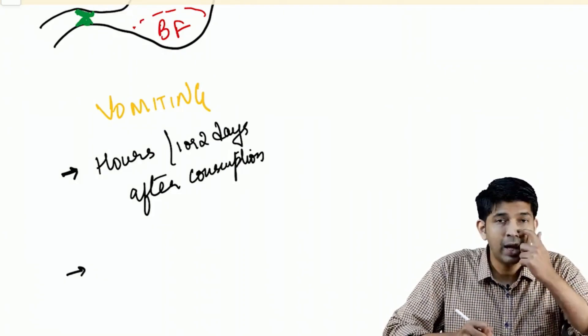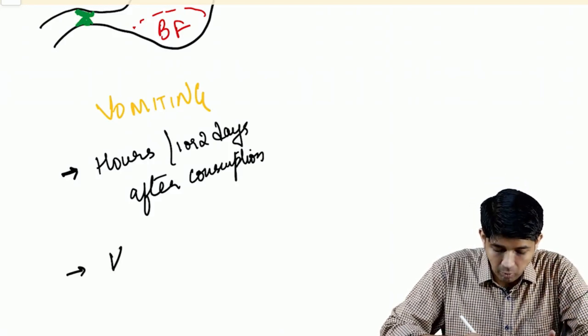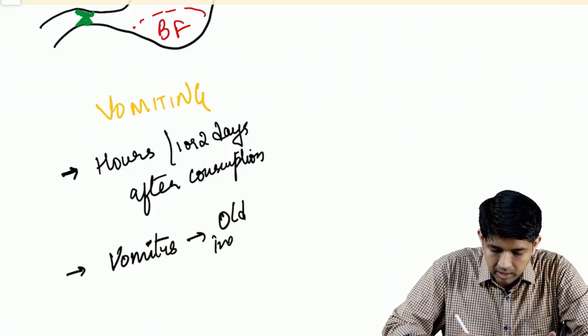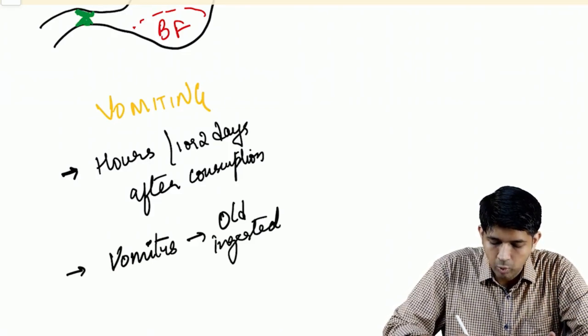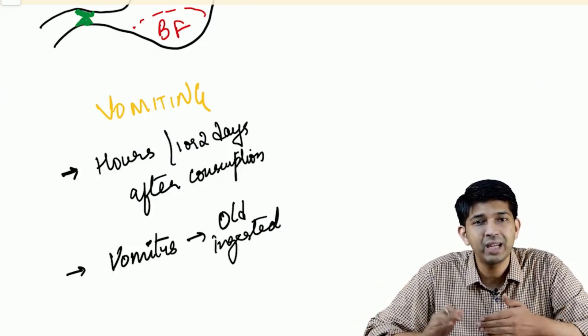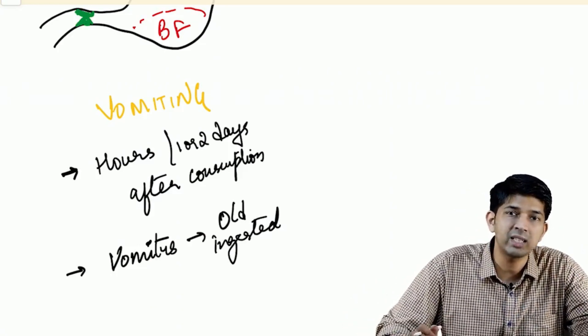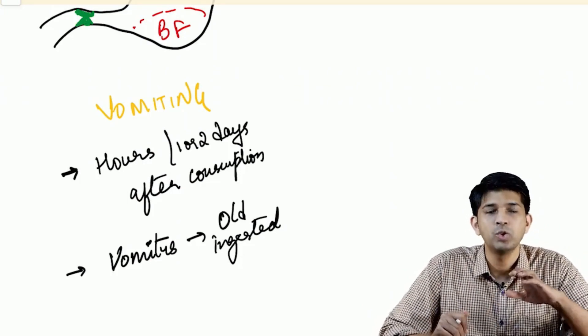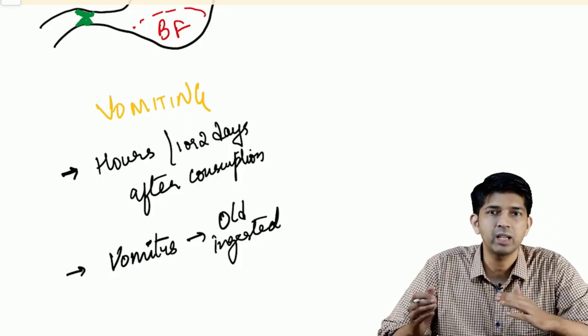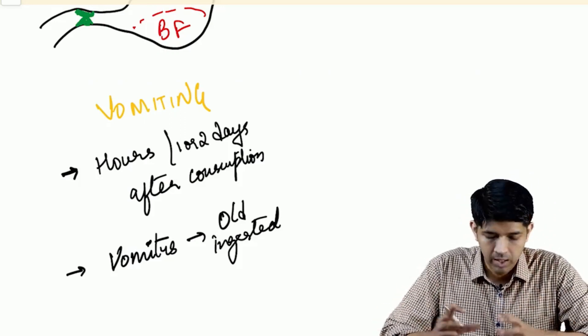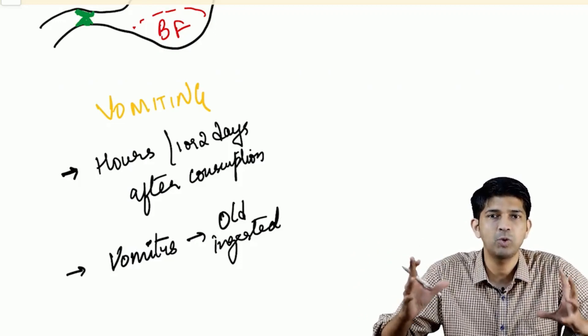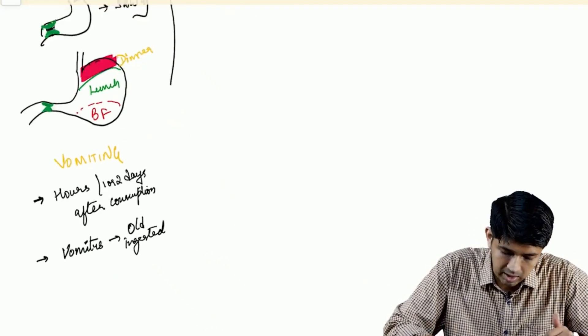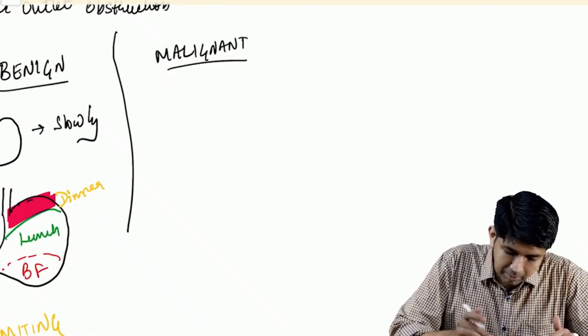It happens hours to days after consumption. The vomitus - the food particles - will contain old ingested particles. When I say old, that means if he vomits today morning, they might contain food he's eaten yesterday morning or yesterday afternoon. It need not have only whatever is eaten now. Just because he vomits today, it doesn't have to be today morning's breakfast. This is because the stomach is distended - it has so much capacity - so it will contain old ingested particles.